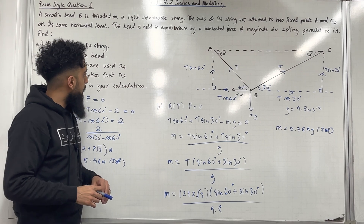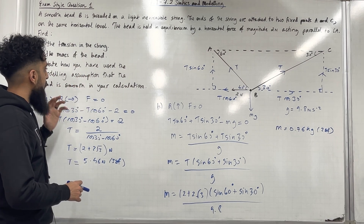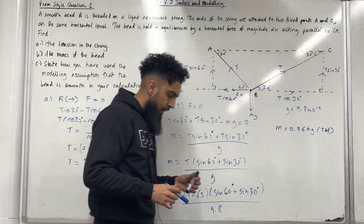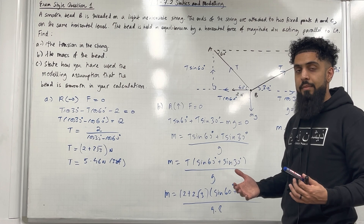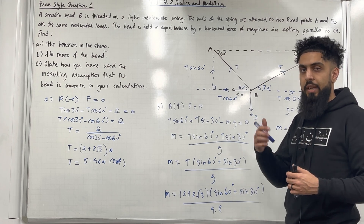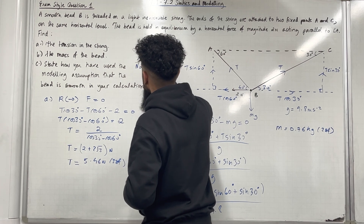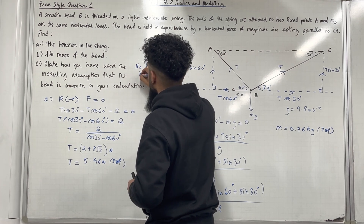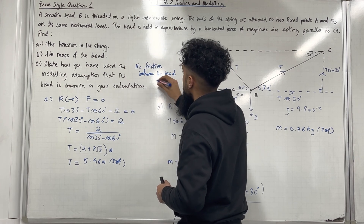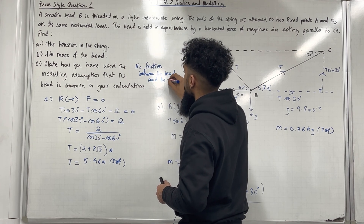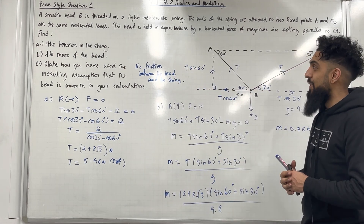In part C, state how you have used the modelling assumption that the bead is smooth in your calculation. We are assuming that there is no friction present between the bead and the string — so, no friction between the bead and the string. That completes exam style question 1.